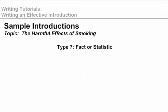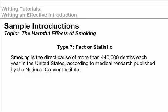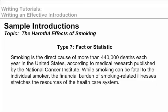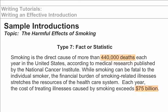Type 7: Offer a surprising fact or statistic. Smoking is the direct cause of more than 440,000 deaths each year in the United States, according to medical research published by the National Cancer Institute. While smoking can be fatal to the individual smoker, the financial burden of smoking-related illnesses stretches the resources of the health care system. Each year, the cost of treating illnesses caused by smoking exceeds $75 billion. For a striking first paragraph, the writer of this essay cites statistics about the risks associated with smoking.